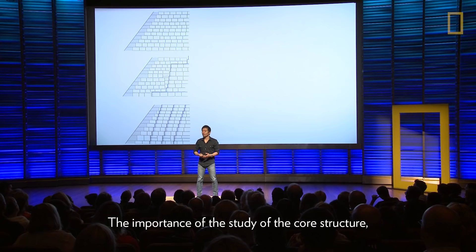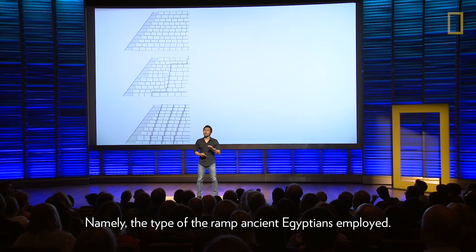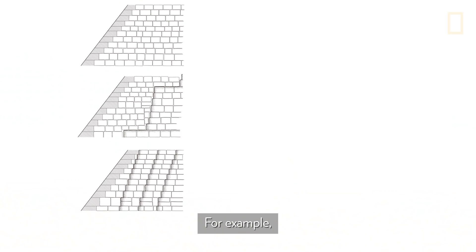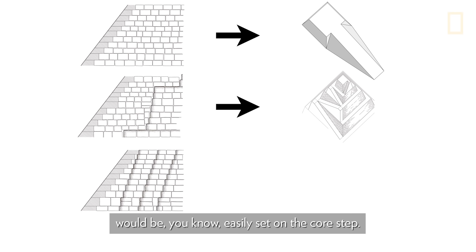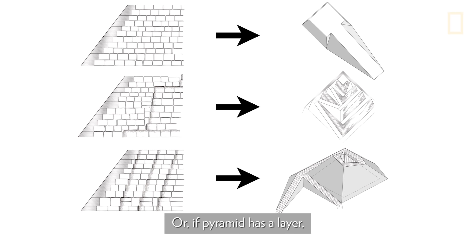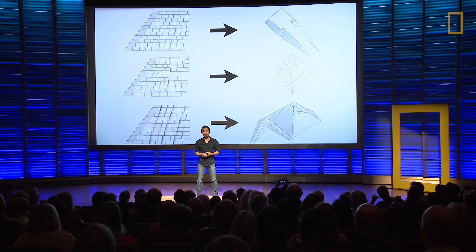The importance of studying the core structure relates to the construction technique — namely, the type of ramp that ancient Egyptians employed. For example, if the ramp is straight, it may be suitable for horizontally arranged blocks. If the pyramid has a stepped core, a zigzag ramp would fit easily on those steps. Or if the pyramid has an accretion layer, a spiral envelope ramp would be appropriate. But we don't know which is correct.